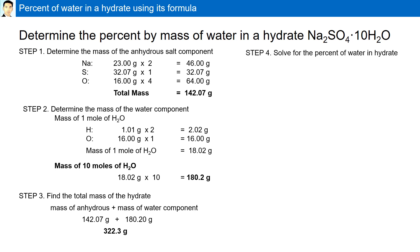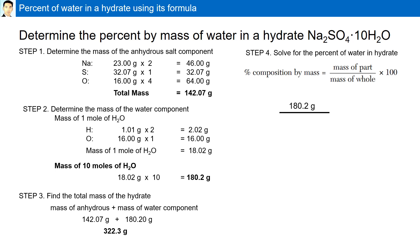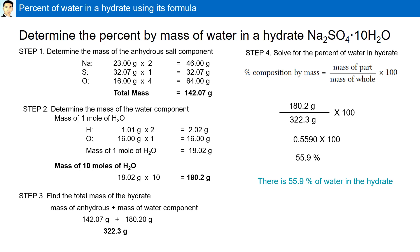Step four is to solve for the percent of water in the hydrate using the formula: mass of part divided by mass of whole, multiplied by 100. 180.2 grams is the amount of water present in the hydrate, divided by the mass of the entire sample, 322.3 grams, multiplied by 100. Our final answer is 55.9%. There is 55.9% of water in the hydrate Na2SO4·10H2O.